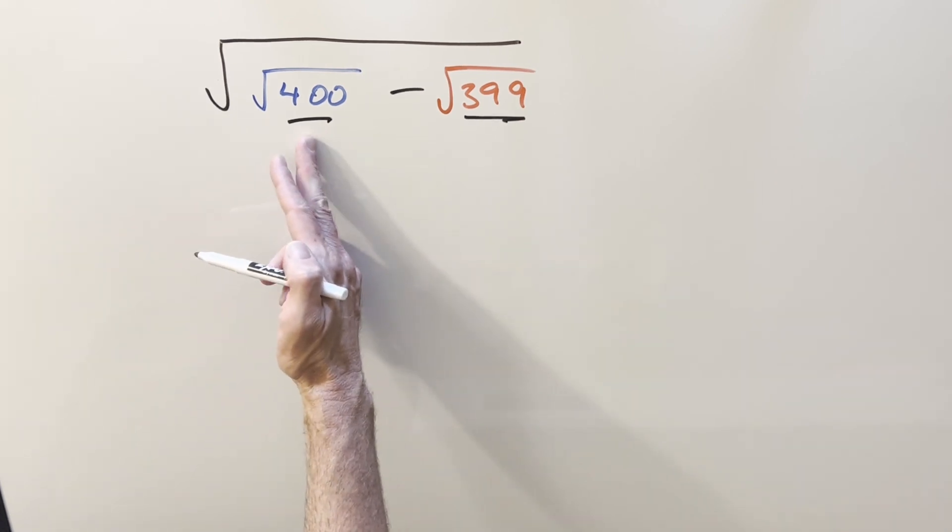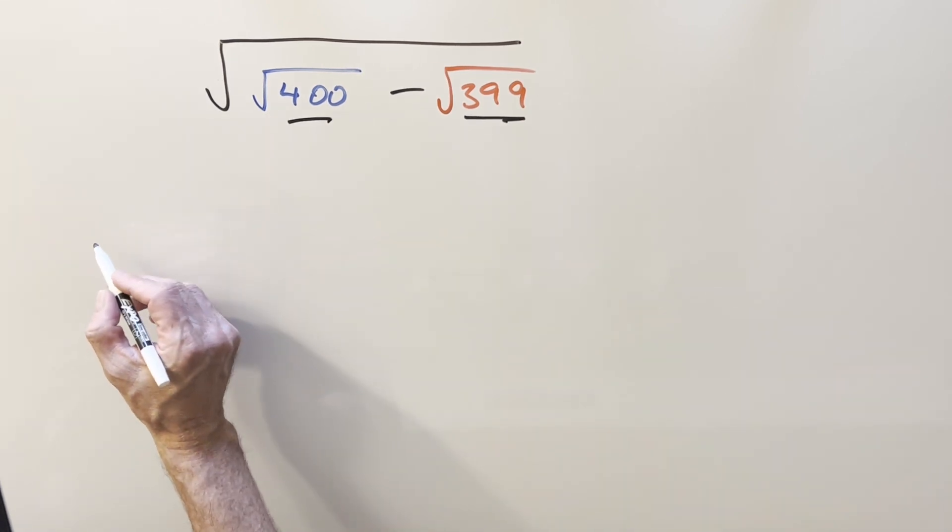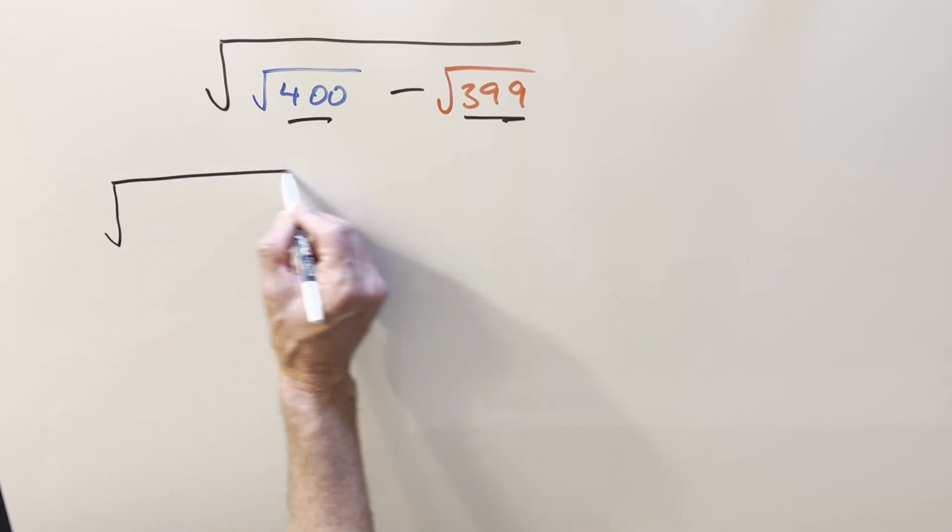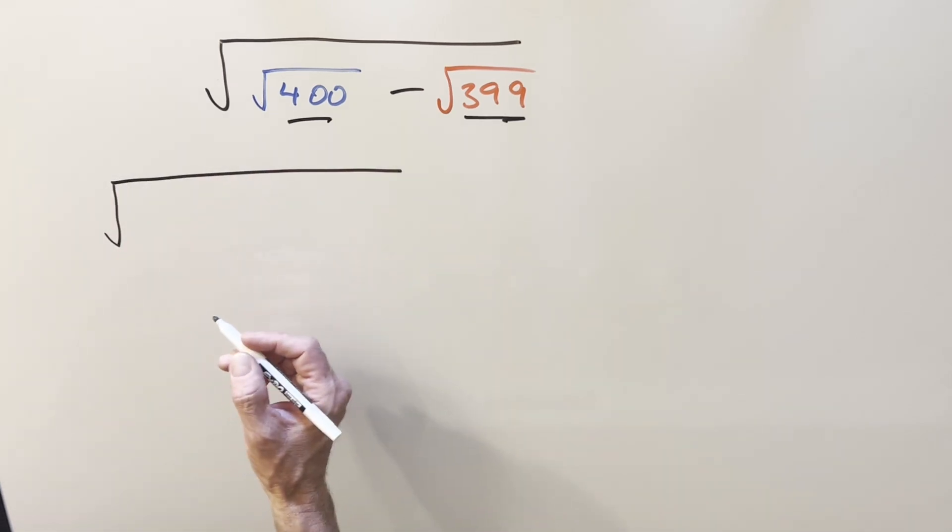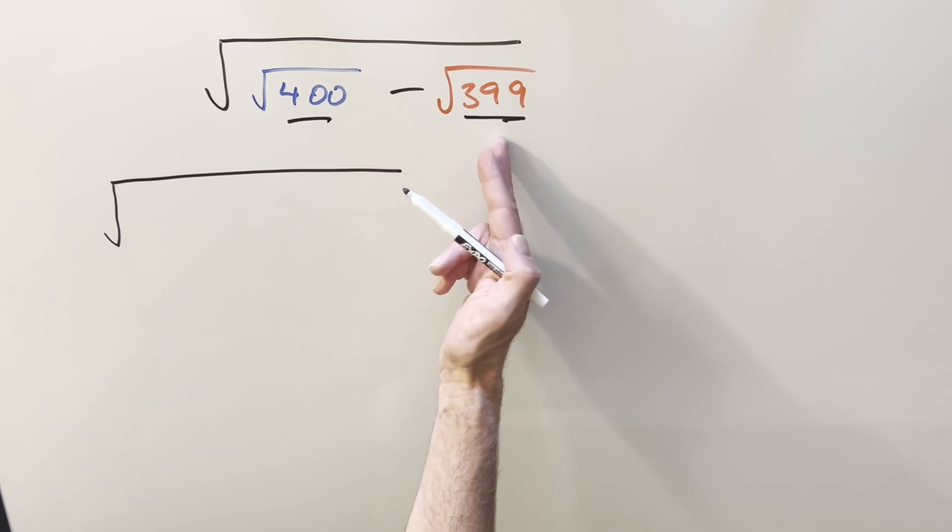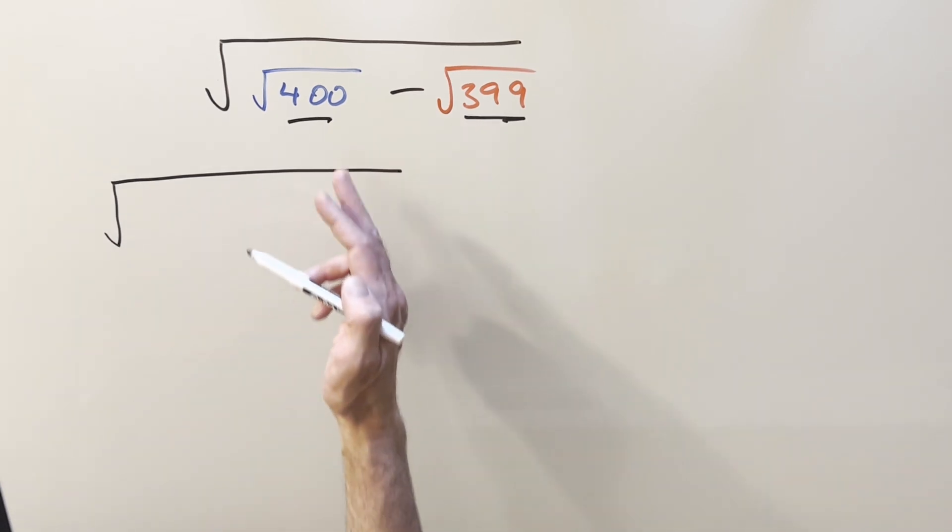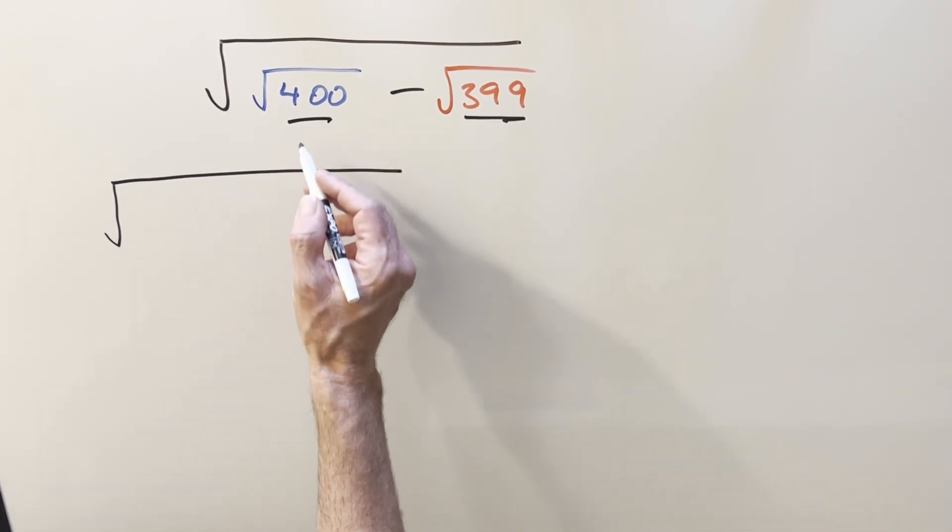So what I'm going to do, instead of thinking about this at first, let's think about the more general problem. Because you can apply the same strategy for any of these, like 25 and 24, or 36 and 35. You'll just see a perfect square here.